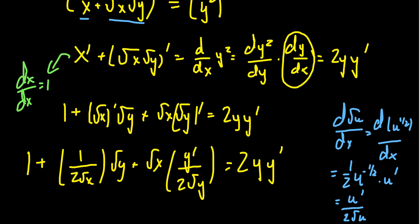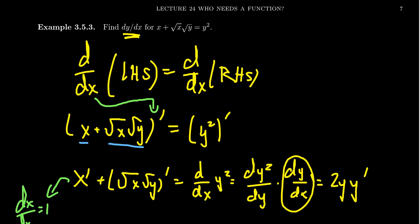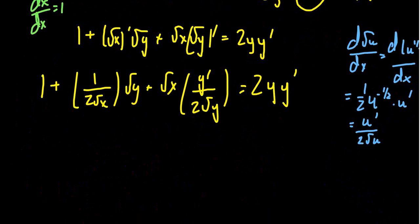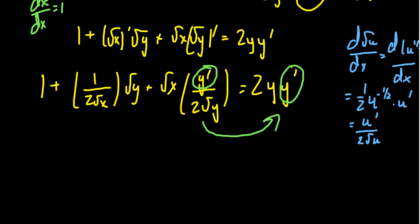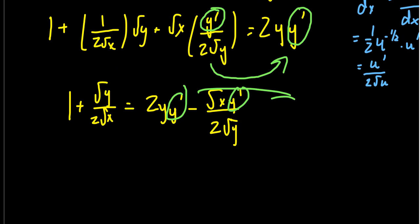Now that we've calculated all the derivatives, we want to solve for y prime, which is dy over dx. Looking at the current equation, we have a y prime in the middle-left term and a y prime on the right-hand side. We want to combine them, so we move the middle term to the right-hand side by subtracting. On the left we're left with 1 plus the square root of y over 2 times the square root of x. On the right we have 2y·y' minus the square root of x · y' over 2 times the square root of y. Now the right-hand side has a common factor of y prime, which we factor out.